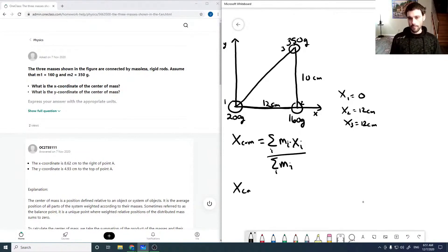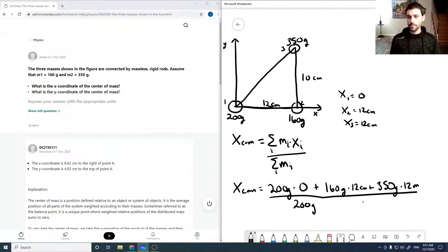And so then the x center of mass is just 200 grams times zero plus 160 grams times 12 centimeters plus 350 grams times 12 centimeters, all divided by 200 grams plus 160 grams plus 350 grams.